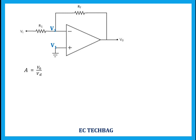Gain is output divided by input. It is an amplifier which amplifies the potential difference between these two points, that is VD. So the output V0 equals the gain A multiplied by VD — that is, A equals V0 divided by VD. In an ideal operational amplifier, the gain value is infinity.